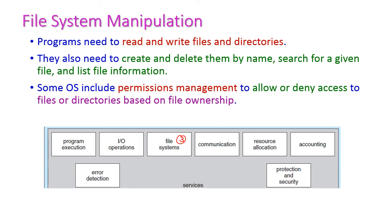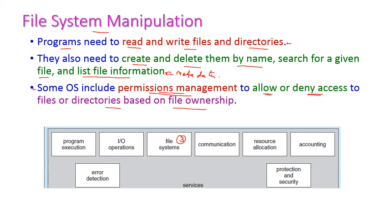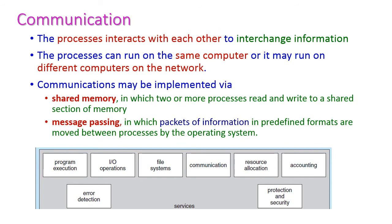The next service is file system manipulation. While executing a program, the program may need to read or write files. It may also need to create a new file, delete an existing file by name, search for a given file, or list file information such as metadata. Some operating systems include permission management — allowing or denying access to files or directories based on file ownership.